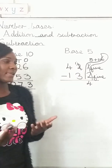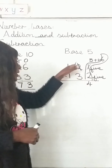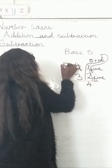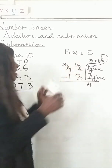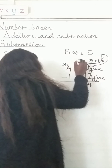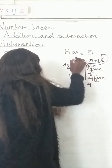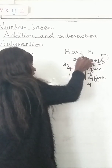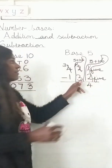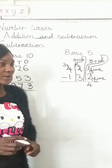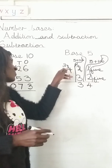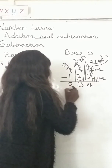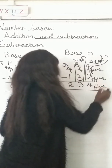1 minus 3 — we can't do that, so we borrow again from the next digit, which is 4, leaving 3. The borrowed amount is again a base of 5, so 5 plus 1 gives 6. Now 6 minus 3 gives 3. Write 3 there. Finally, 3 minus 1 gives 2 — no borrowing needed. Write 2 there, and include your base label: base 5.